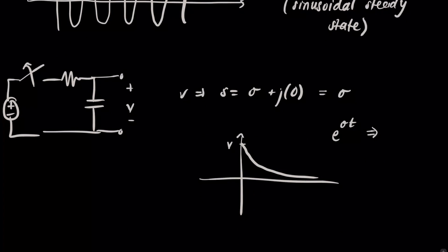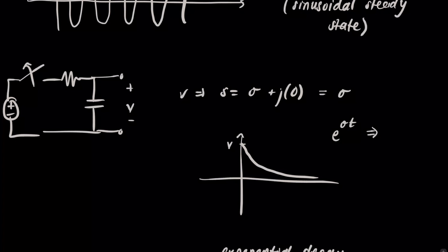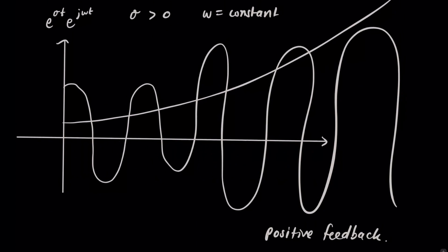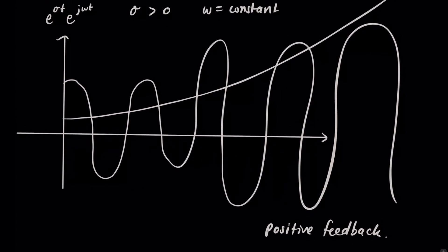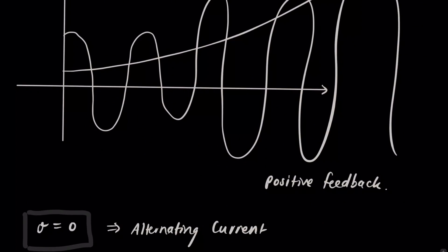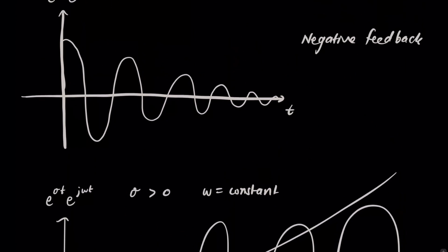We have exponential decay. And we also have the in-betweens. We have this exponentially increasing sinusoid and we have this exponentially decreasing sinusoid. Or positive feedback and negative feedback.